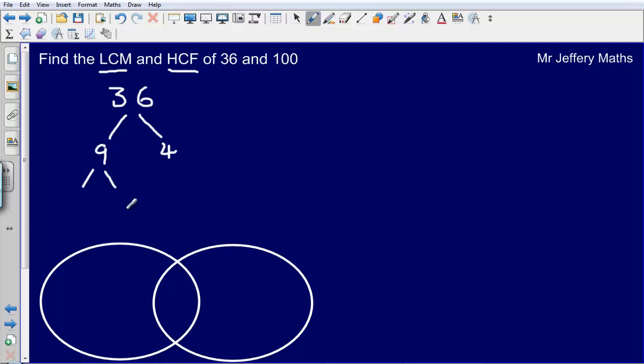So how can I make 9? Well I can do that by 3 times 3. Whenever you get two prime numbers, circle them, so 3 is a prime number so I've circled those two there. Then 4 I can do as 2 multiplied by 2.